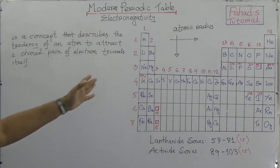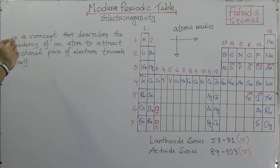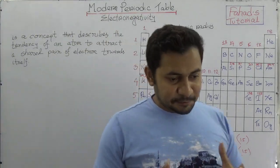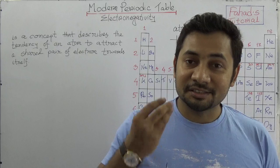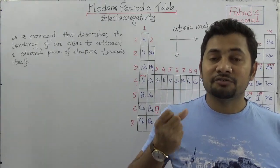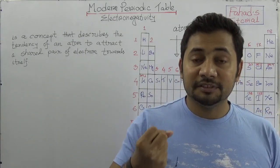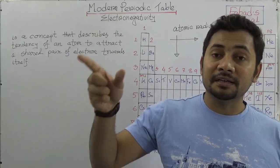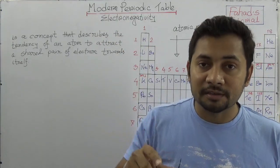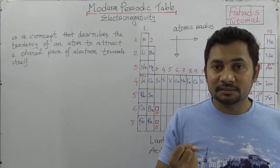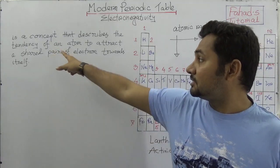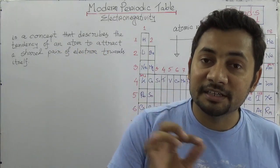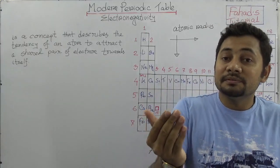Let's define electronegativity. It is a concept that describes the attraction of shared electrons when atoms take part in a covalent bond — specifically, the tendency of an atom to attract the shared pair of electrons to itself.